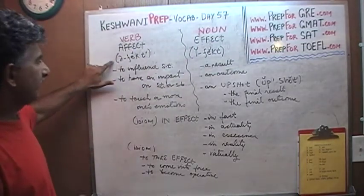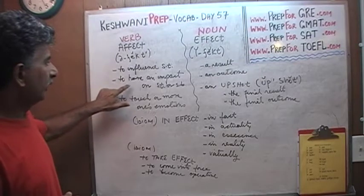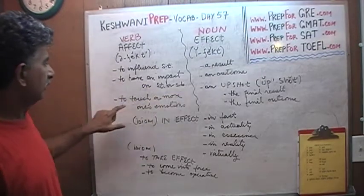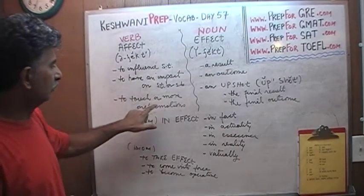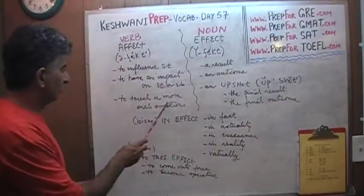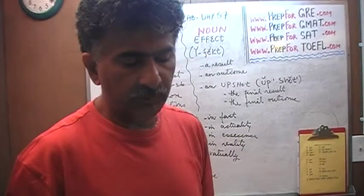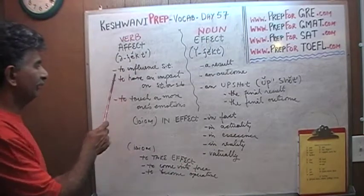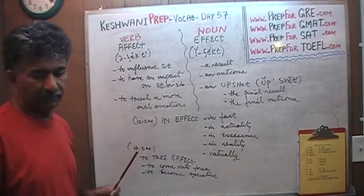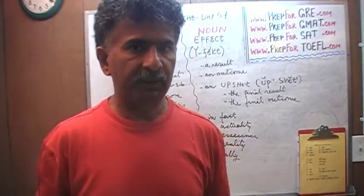What does it mean to affect? To affect — because it's a verb — means to influence something, to have an impact on something or somebody, or to touch or to move one's emotions. For example, if somebody is telling you about a movie and they say, 'That scene really affected me,' what they're telling you is that they were really moved by that scene, they were really touched by that scene. There was something in that scene that stirred some emotions in them.